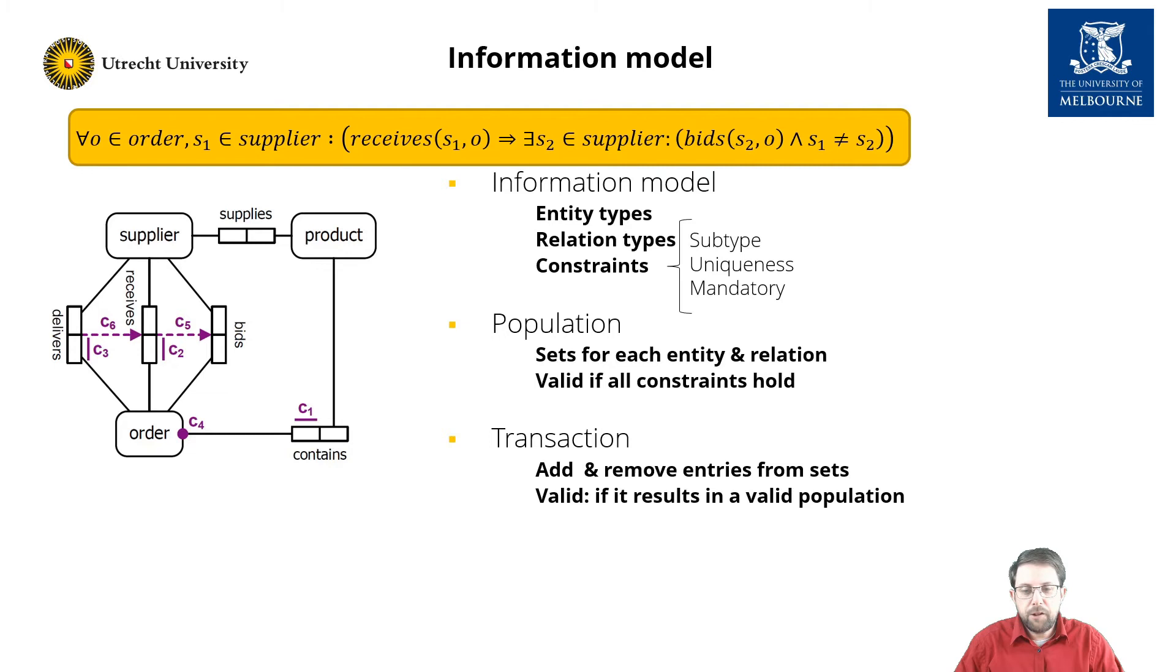The information model is populated with sets and relations. And we say that a population is valid if it satisfies the constraints of the information model. Transactions are used to manipulate the populations of the information model by adding and removing entries from sets and relations.